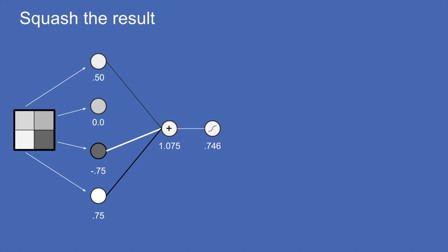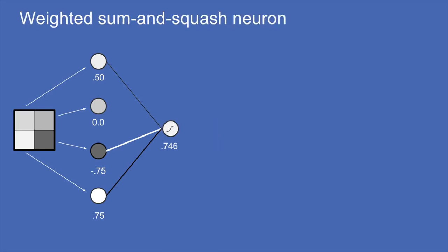After summing the weighted values of neurons and squashing the result, you get the output — in this case 0.746. We can collapse all that down: a neuron does a weighted sum and squashes the result.